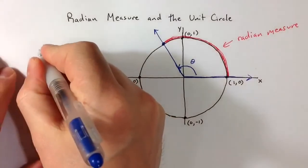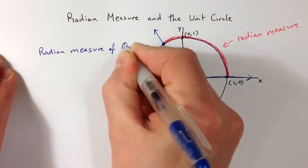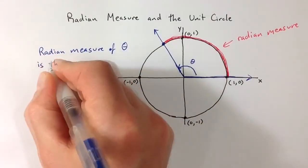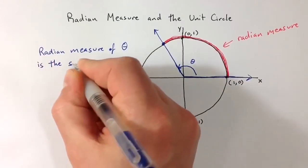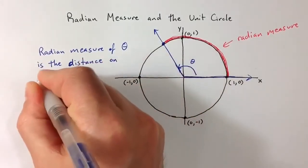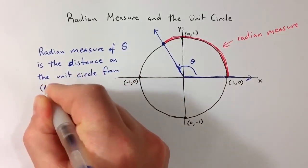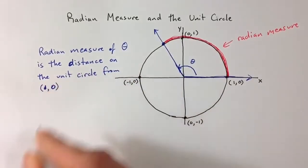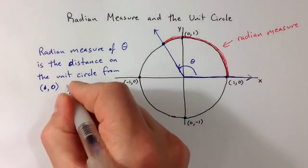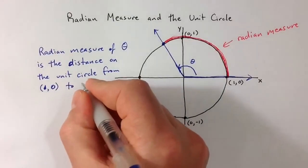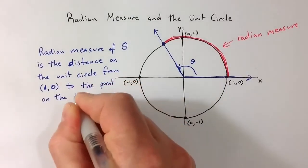The radian measure of an angle theta is the distance on the unit circle from (1,0), the point where the initial side crosses the x-axis, to the point on the terminal side of theta.